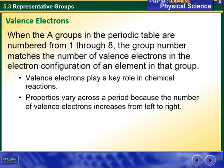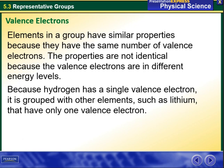Valence electrons play a key role in chemical reactions. Properties vary across a period because the number of valence electrons increases from left to right. Elements in a group have similar properties because they have the same number of valence electrons. However, properties are not identical because the valence electrons are in different energy levels. Also, because hydrogen has a single valence electron, it is grouped with elements such as lithium that have only one valence electron.